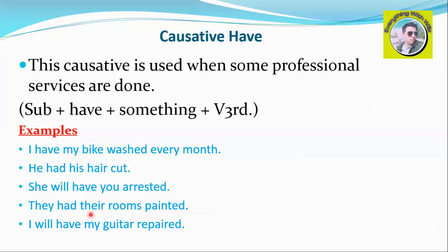'They had their rooms painted' — past form with 'had.' And: 'I will have my guitar repaired.' These are examples of the 'have' causative verb used in the passive voice.